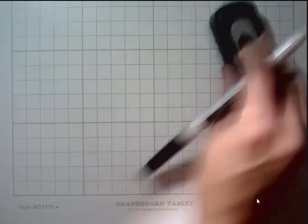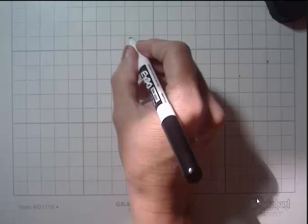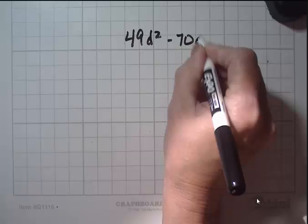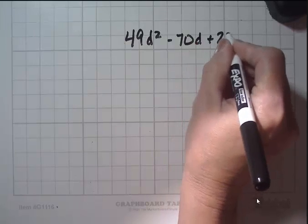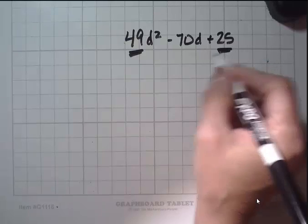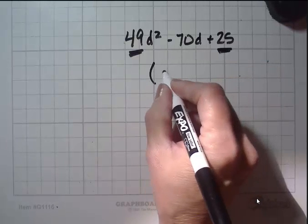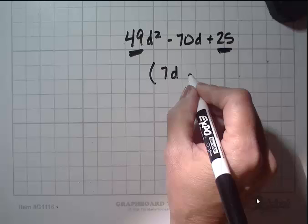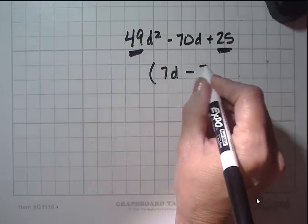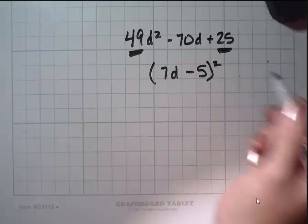Let's do two more problems just to make sure you've really got it. 49d squared minus 7d plus 25. This is a perfect square. This is a perfect square. I can use my special problems rule. 7d minus 7d minus 5. And that whole thing is squared.